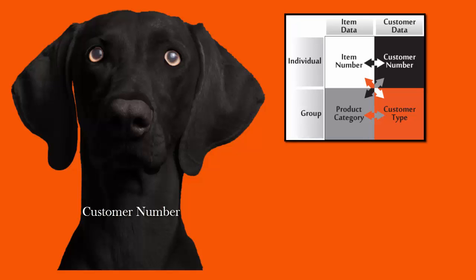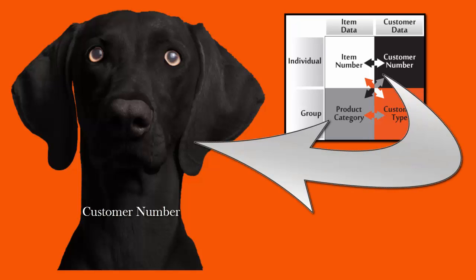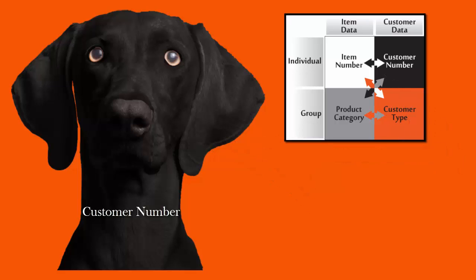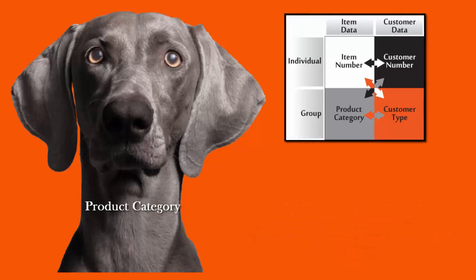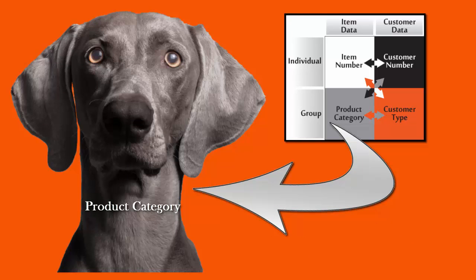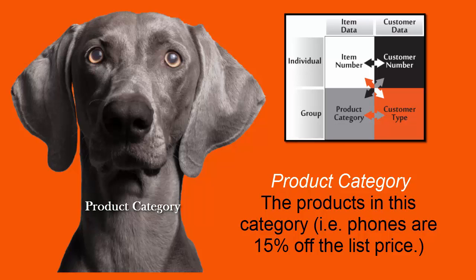The second way to set your prices is according to the customer number. Rarely would you say that one customer gets all items for $10, but you might want a customer to get a percentage off of the item — for example, customer number 100 gets 10% off all items purchased. The third way is to price according to the product category; maybe you want all electronics to be 15% off the list price.